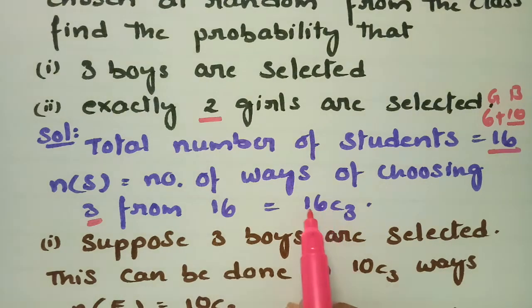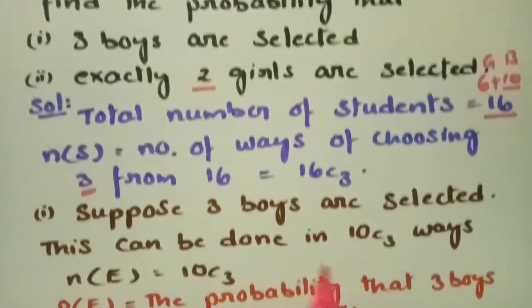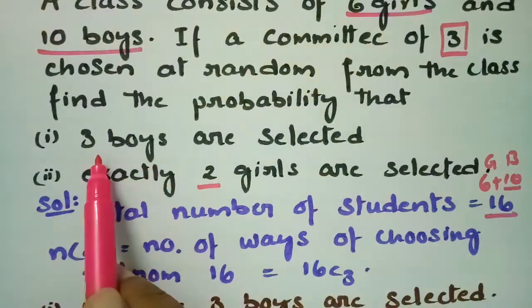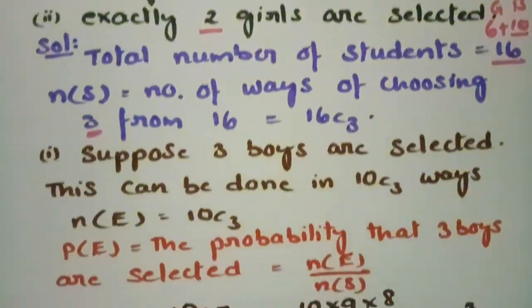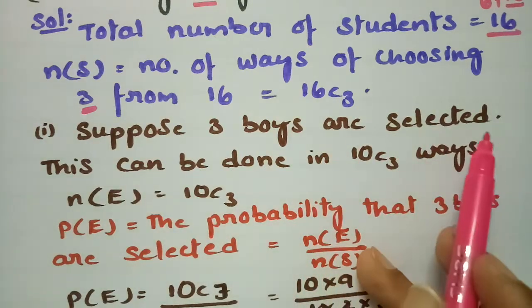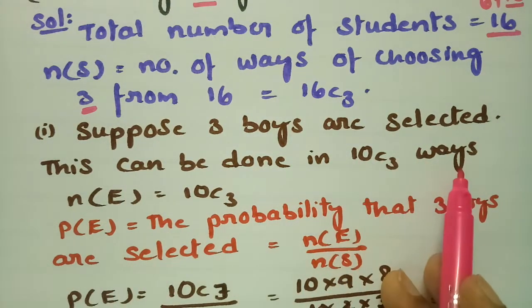The first question is 3 boys are selected. Suppose 3 boys are selected. This can be done in 10C3 ways, so n(E) = 10C3.